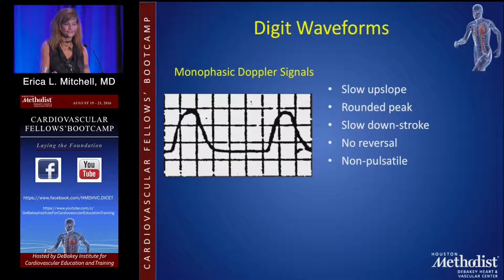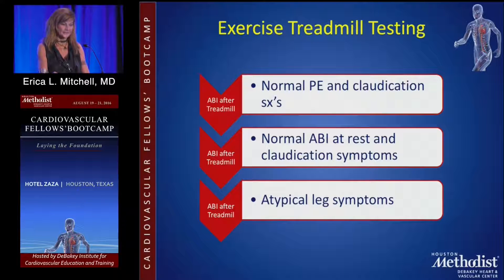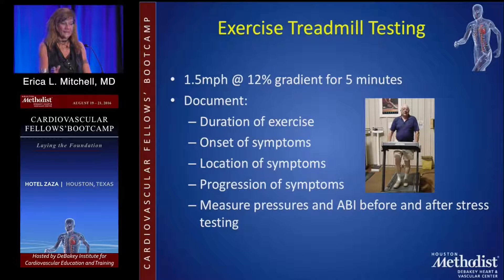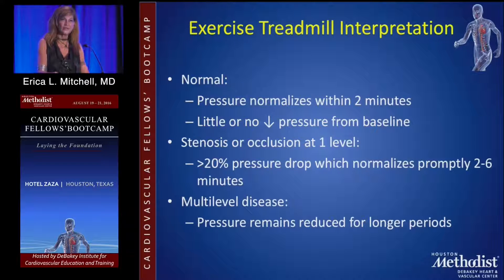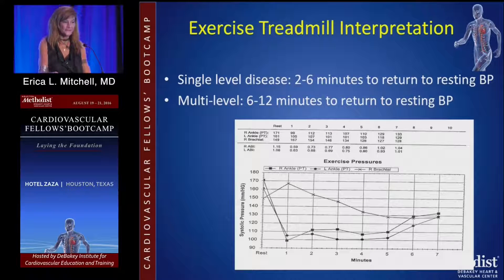Exercise treadmill testing is classically performed for patients with claudication symptoms but a normal physical exam — their ABI may be normal at rest. Patients walk for five minutes, and you document the duration of exercise, onset of symptoms, location of symptoms, whether they have to stop, and measure ABI pre- and post-exercise. Normal pressure increases with exercise; a fixed lesion causes a drop in ABI greater than 20% with a longer refractory time to pressure normalization. Multi-level disease takes longer to normalize than single-level disease.